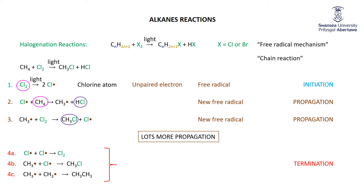These chain reactions with initiation, propagation, and termination steps are discussed at various points in chemistry. They can come up for polymerization, for these halogenation reactions, for other free radical reactions, and we'll certainly see them again when we start talking about alkenes.